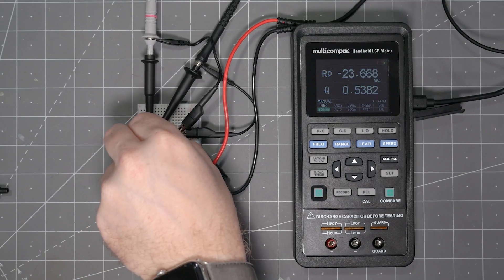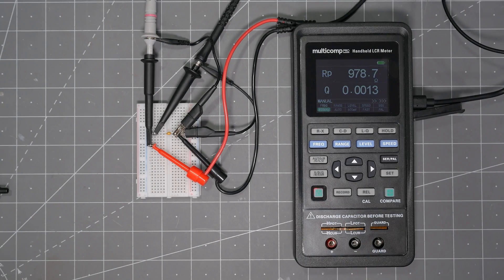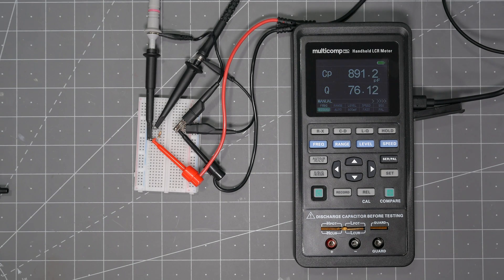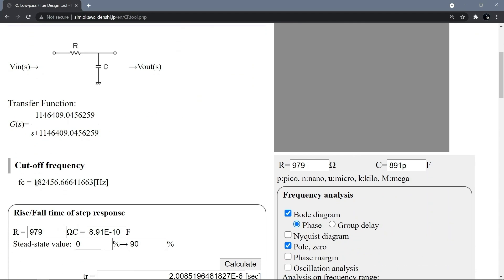Removing the resistor from the circuit and measuring it in the meter, we see that its actual value is 979 ohms. For the capacitor, I let the value settle for a little while, and it came out to be 891 picofarads. Using these values in the same calculator, the expected cutoff frequency should have been around 182 kHz. So we're still off by a little bit. Let's think about a few reasons.